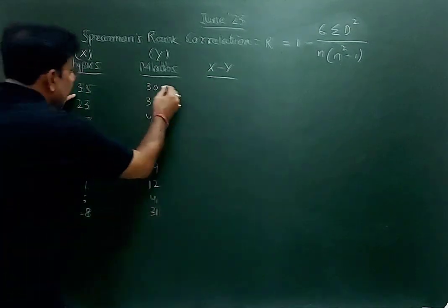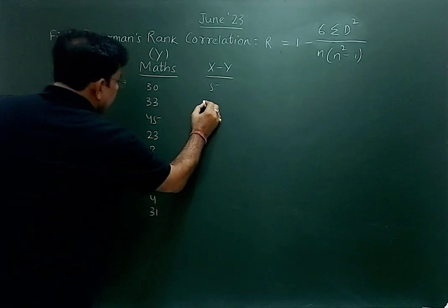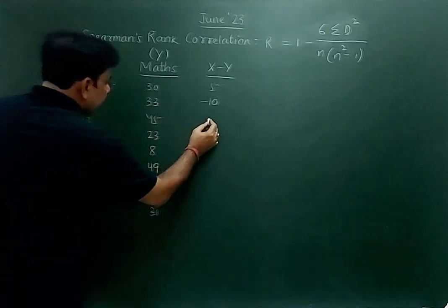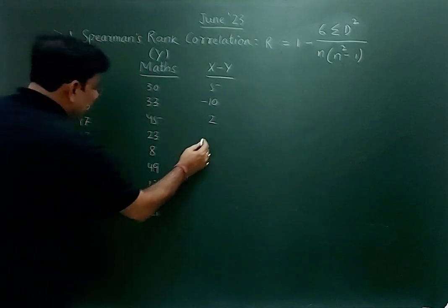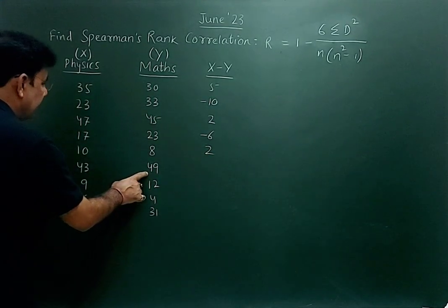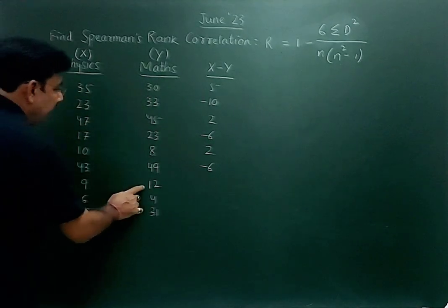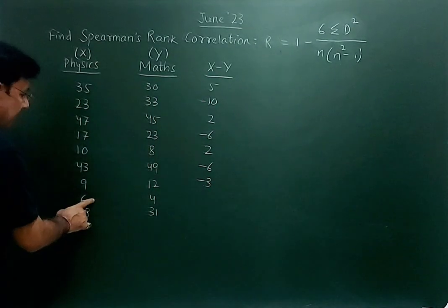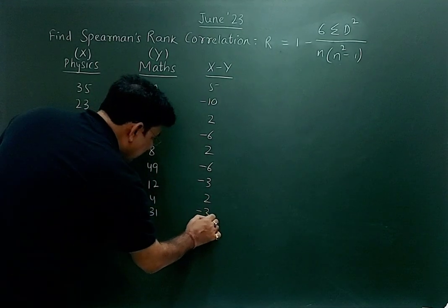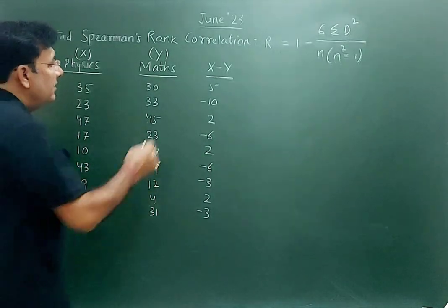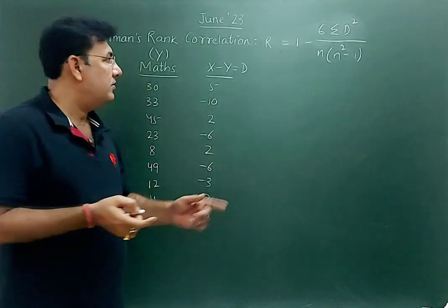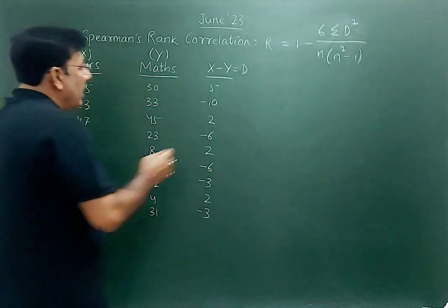35 minus 30 gives 5; 23 minus 33 gives minus 10 — be particular because this is a smaller number and this is a bigger number. 47 minus 45 is 2; 17 minus 23 is minus 6; 10 minus 8 is 2; 43 minus 49 is minus 6; 9 minus 12 is minus 3; 6 minus 4 is 2; 28 minus 31 is minus 3. This difference is called d — the difference between the ranks.